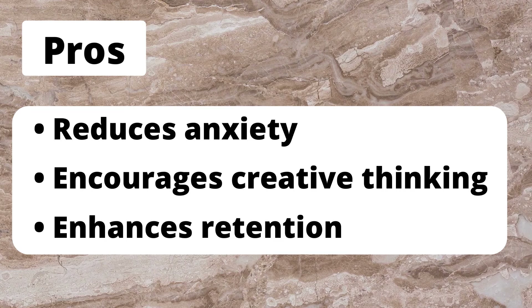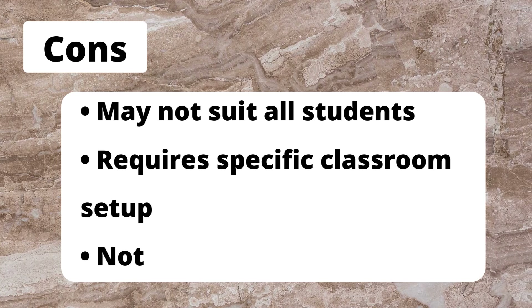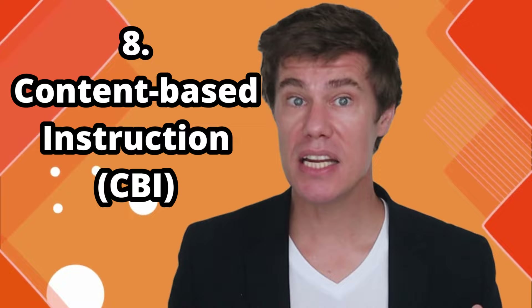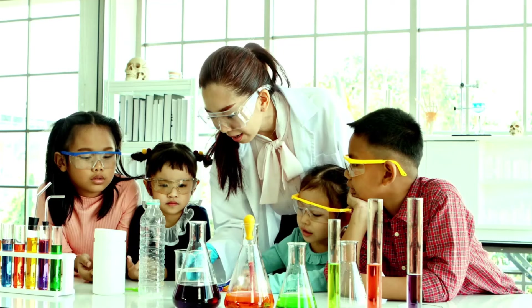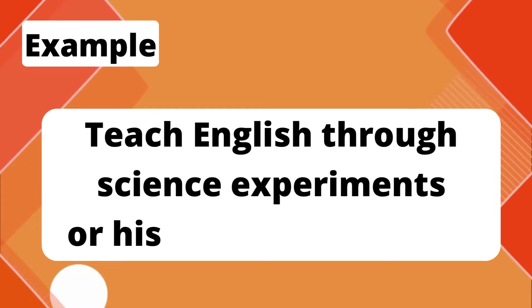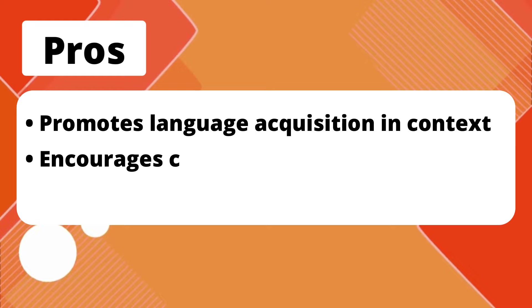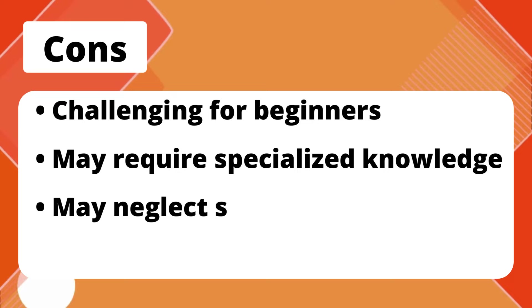Cons: may not suit all students, requires a specific classroom setup, not applicable in all settings. Content-based instruction, CBI, integrates language learning with the study of subject matter content, such as science or history. In CBI lessons, students learn language in context while exploring academic subjects. This approach prepares learners for academic language and helps them acquire language skills naturally within a meaningful context. Example: teach English through science experiments or historical discussions. Pros: promotes language acquisition in context, encourages critical thinking, prepares students for academic language. Cons: challenging for beginners, may require specialized knowledge, may neglect specific language skills.